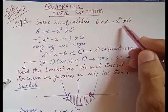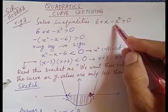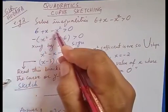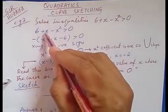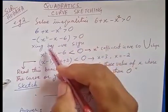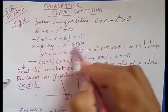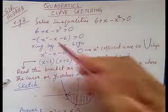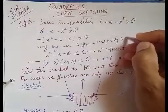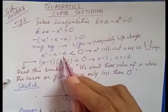A very simple first step is to make the coefficient of x-squared positive. We take the negative sign as a common factor: x-squared becomes positive, plus x becomes negative, and six becomes minus six. The inequality sign changes — since we multiply by a negative sign, greater than zero becomes less than zero.